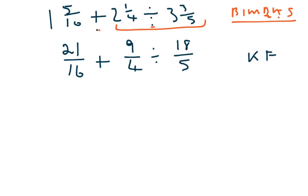Now I'm going to do KFC, keep, flip, change. So we're going to get 21 over 16, plus 9 over 4, multiplied by 5 over 18.